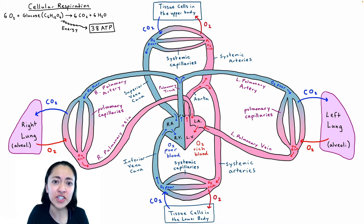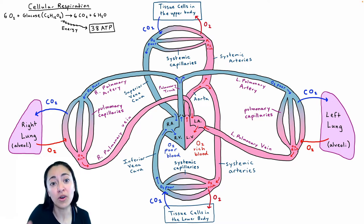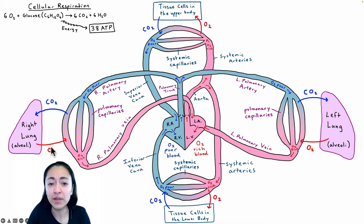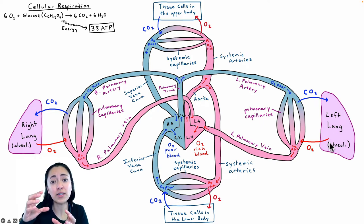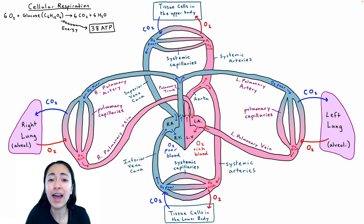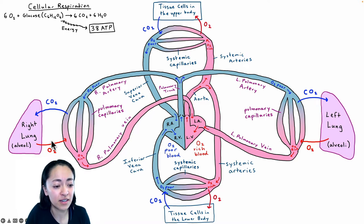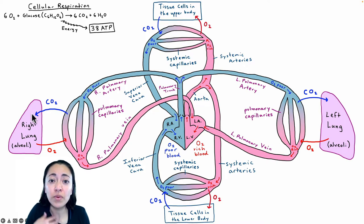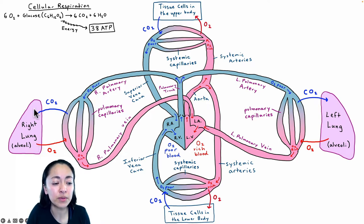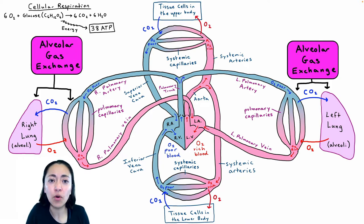Now let's look at how oxygen gets from the air into our blood, and then from our blood into our tissue cells. The movement of oxygen into the blood comes from the lungs — specifically the alveoli. Between the alveoli and the pulmonary capillaries, that's where our blood becomes oxygenated. Oxygen enters the pulmonary capillaries, and carbon dioxide leaves our blood and enters our lungs so that we can exhale that waste product. This process — where oxygen enters our blood and carbon dioxide leaves our blood and enters our lungs — is called alveolar gas exchange.